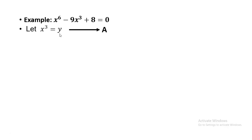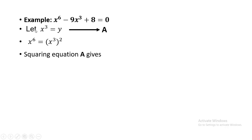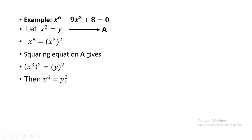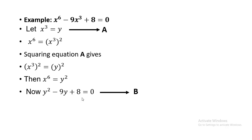If I just square this equation A, 3 times 2 is 6, so X⁶ = Y². These are the two substitutions: X³ = Y and X⁶ = Y². Substituting into the equation gives Y² minus 9Y plus 8 equals to 0, named as equation B.